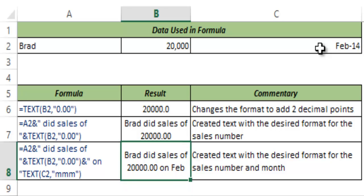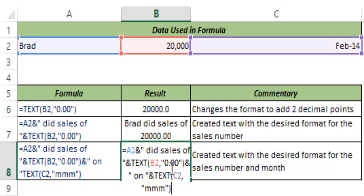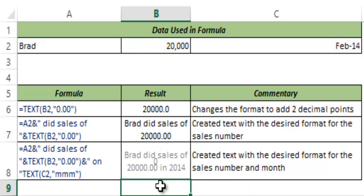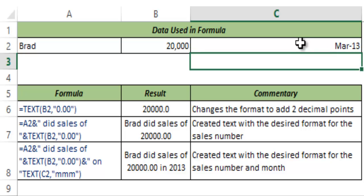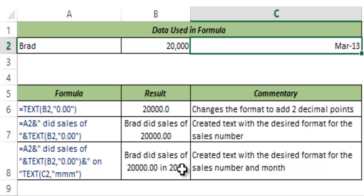And you can see the text now reads 'Brad did sales of 20,000 on Feb.' I know the English should be 'in Feb', but you can change this accordingly. You can also use a year format, and this would give you 'Brad did sales of 20,000 in 2014.' This gives you the flexibility to choose the format for numbers and dates and append text to make it dynamic. You can change the date to March 2013 and it would automatically update. This is the benefit of using the TEXT function in Excel.